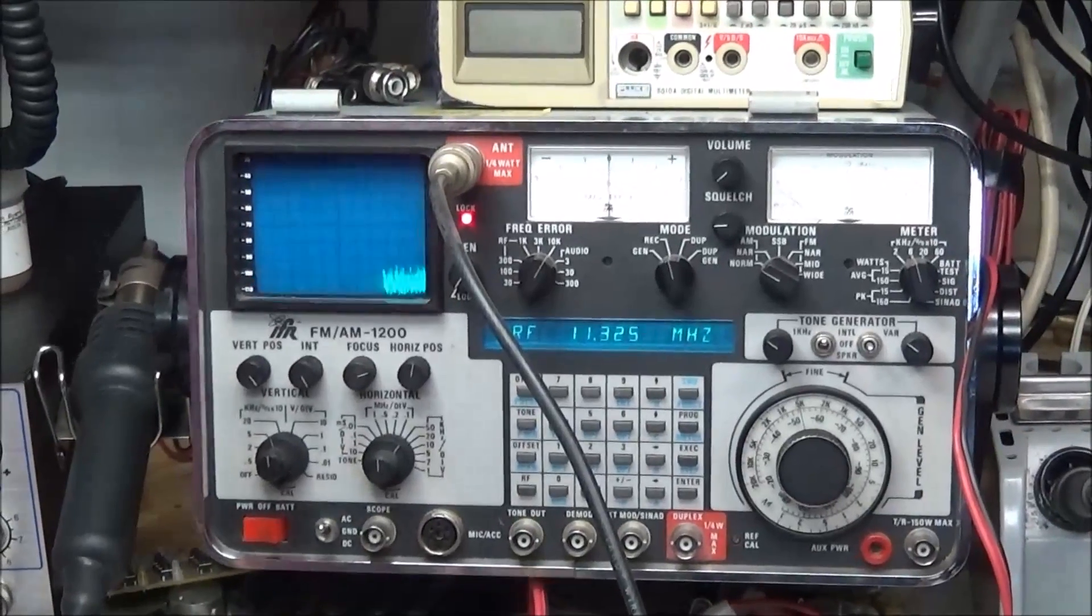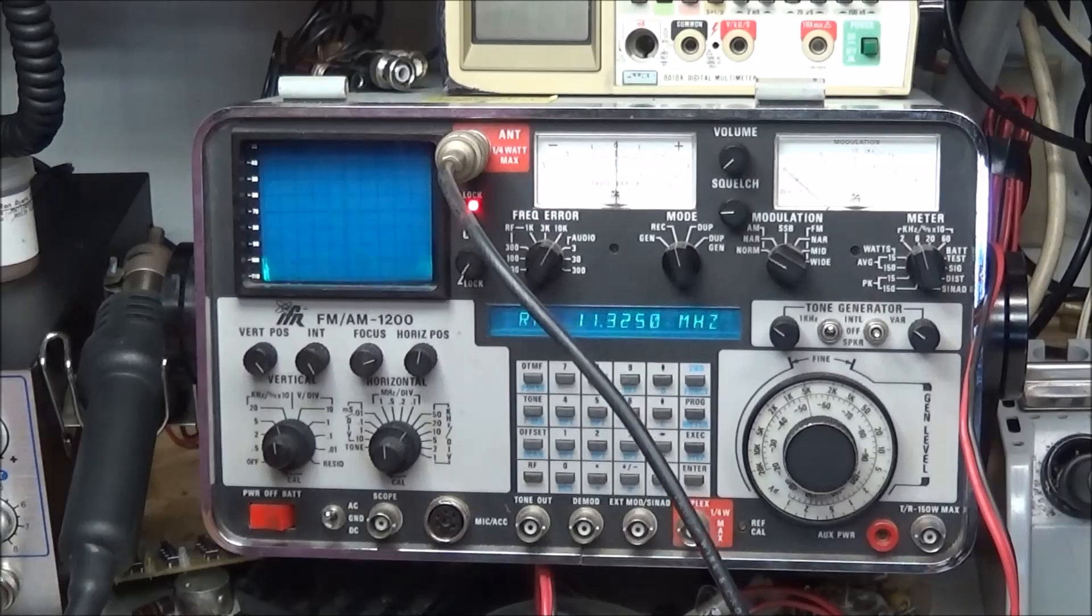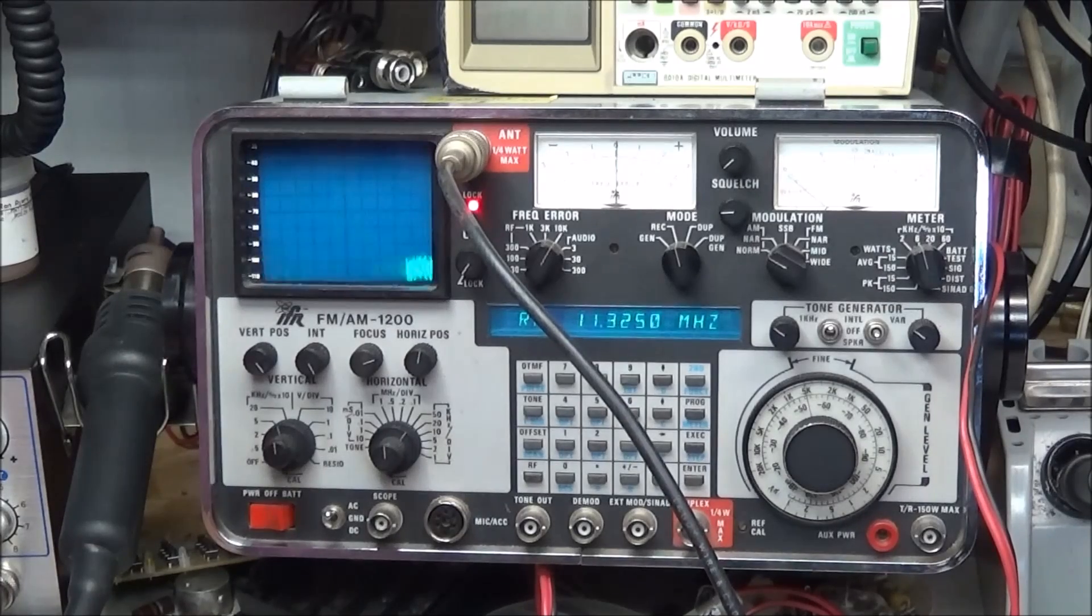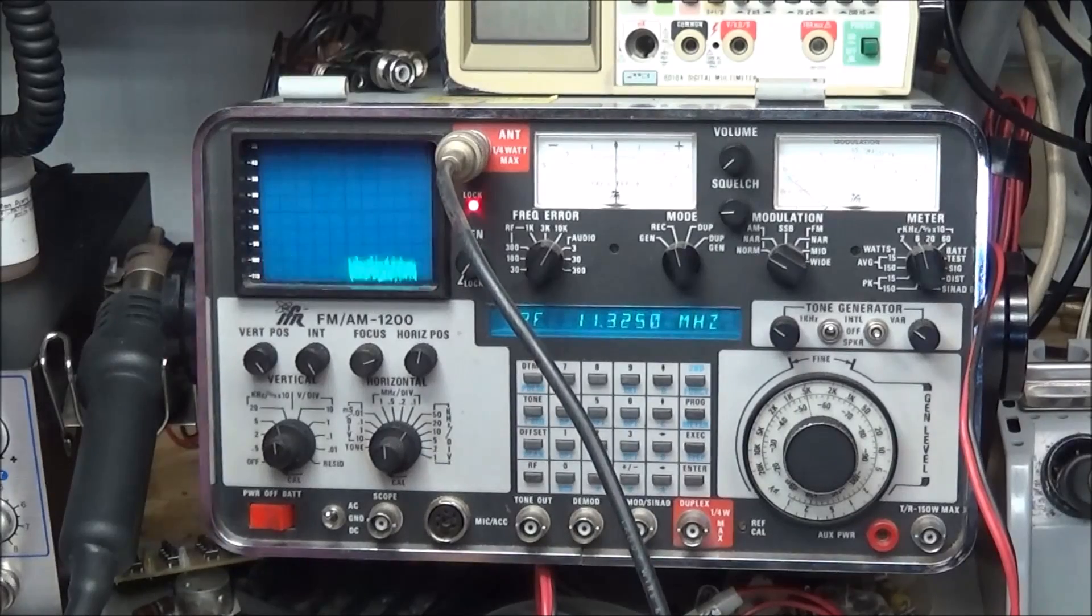Also here in the Cobra 2000 we have an 11.375 megahertz crystal, and we simply dial that into the spectrum analyzer and we can go in and check and see that signal. Very healthy signal.